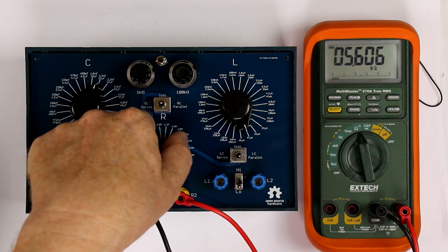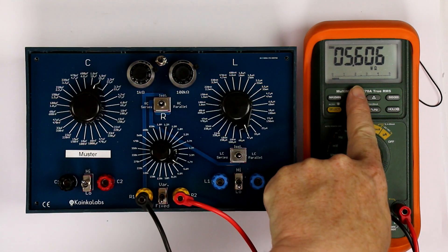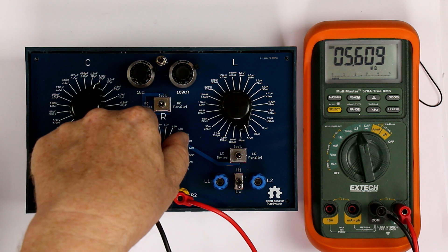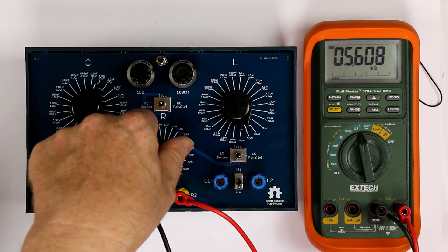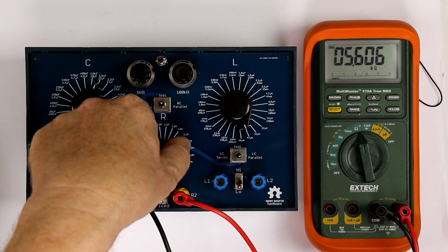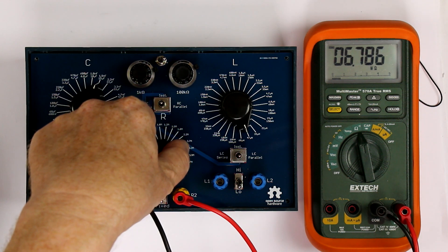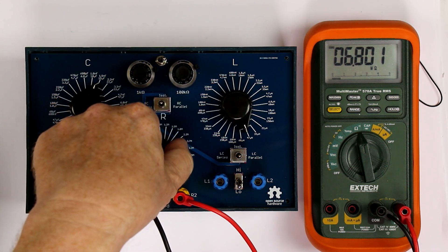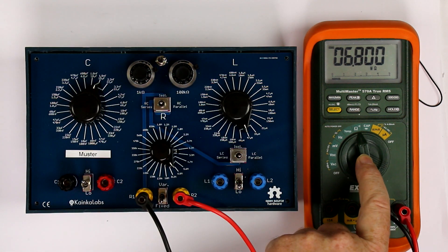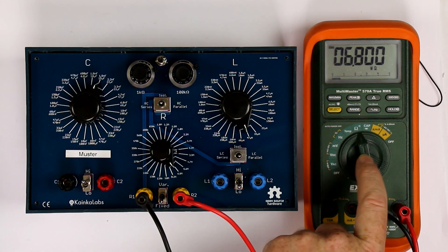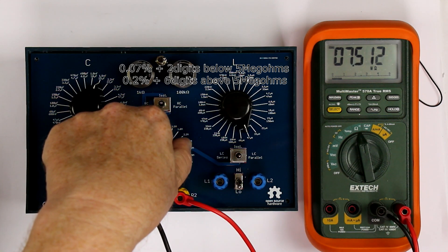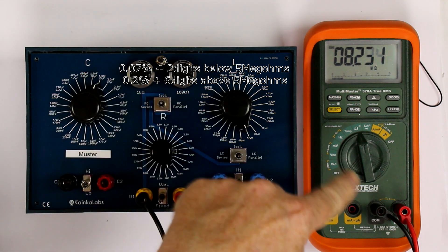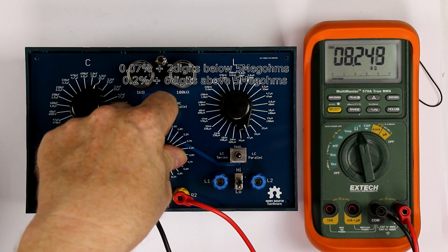Now we are at 5.6, remember this 5.606, so it's quite near to the exact value. Then comes 6.8 meg, and you see the resistors are nearly spot-on, and the accuracy here in the resistance range is very good. So we can trust the displayed values.